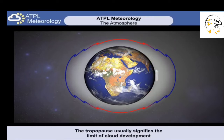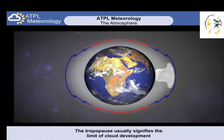Why is the tropopause so important to us? Well, the tropopause signifies the start of a marked temperature inversion. This effectively limits the vertical movement of air and clouds within our atmosphere. It's useful to know, then, that the tropopause usually signifies the limit of cloud development.